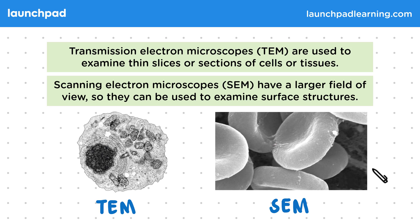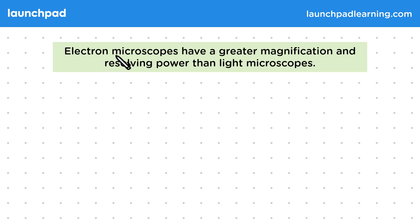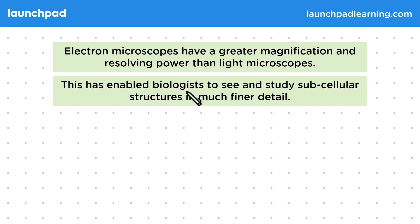So what is the major difference in the images produced by light microscopes and electron microscopes? Electron microscopes have a greater magnification and resolving power than light microscopes. Light microscopes have a maximum resolution of about 200 nanometers, meaning we can't distinguish two points closer than 200 nanometers apart because the image merges into one. However, electron microscopes can go much smaller, to around 0.1 nanometers, enabling biologists to see and study subcellular structures in much finer detail.